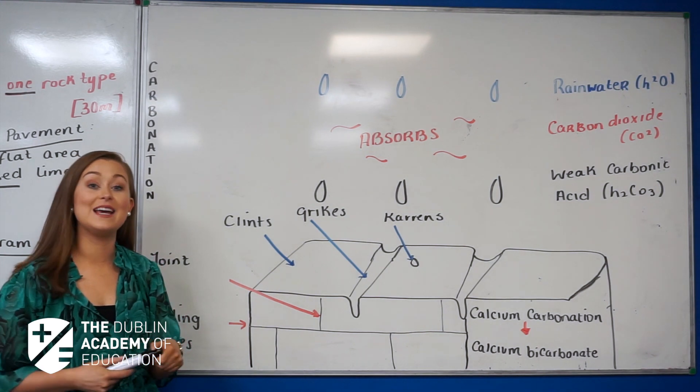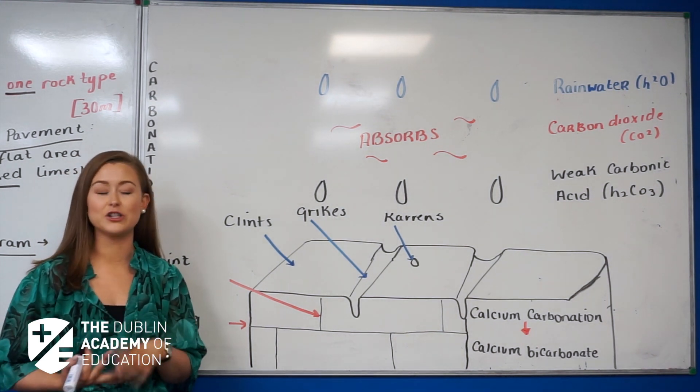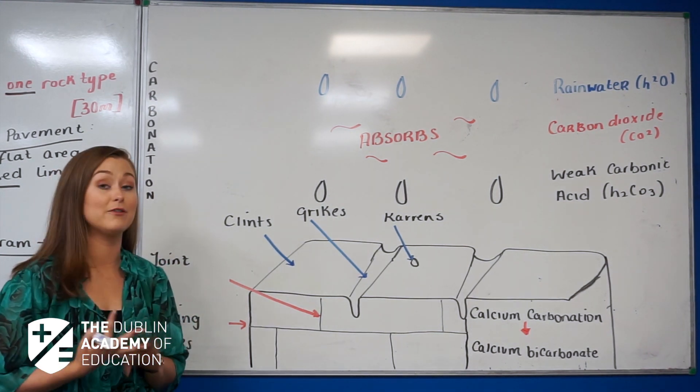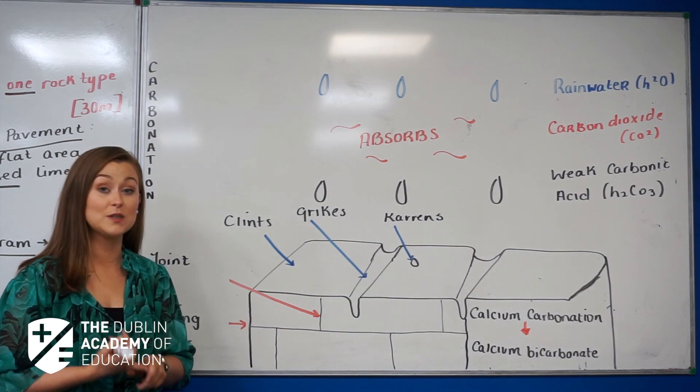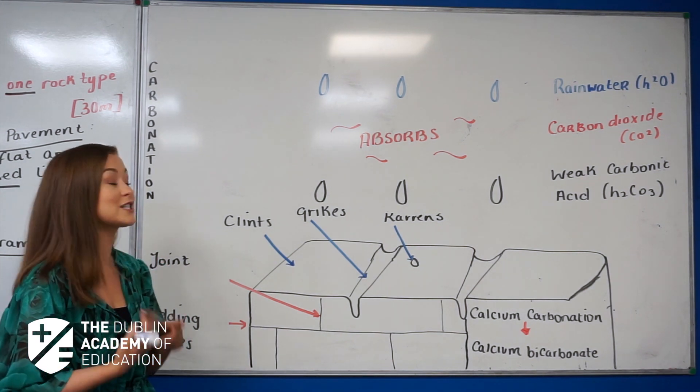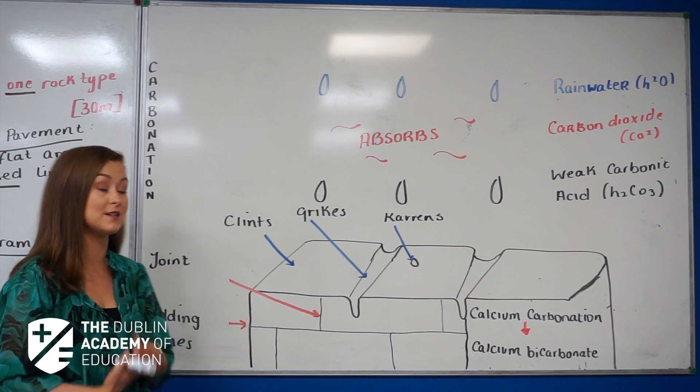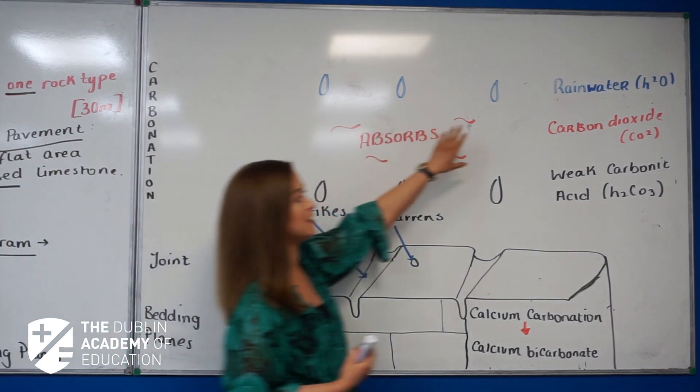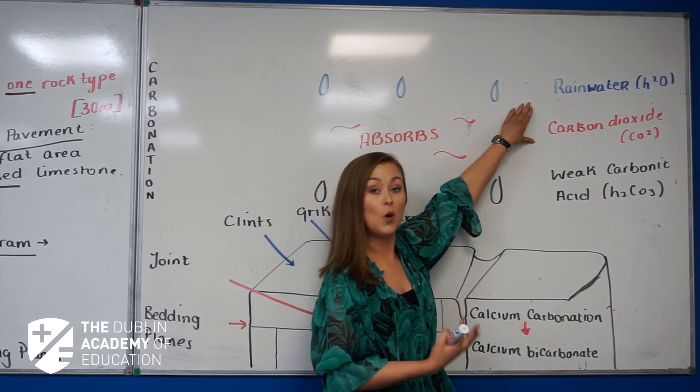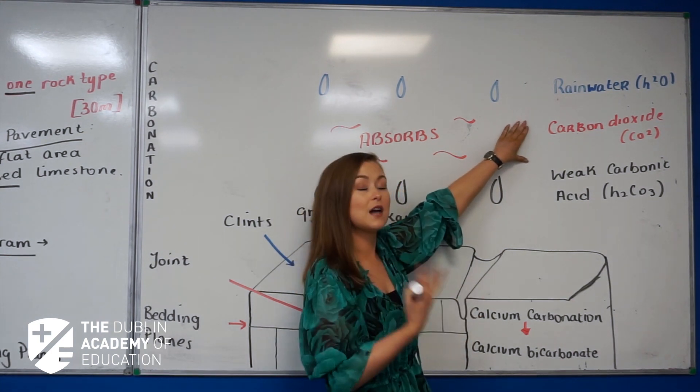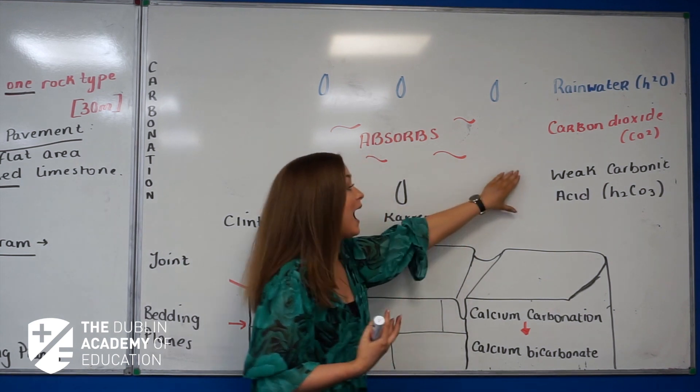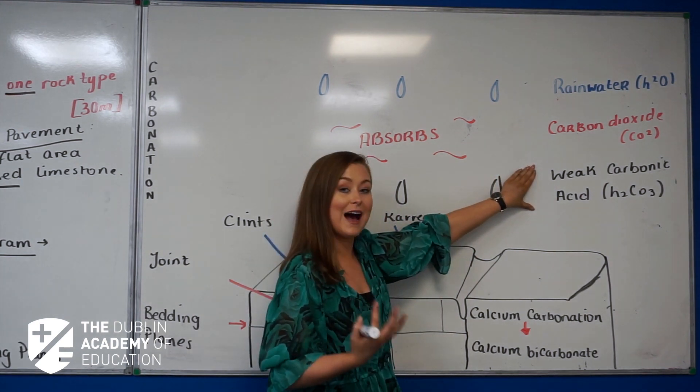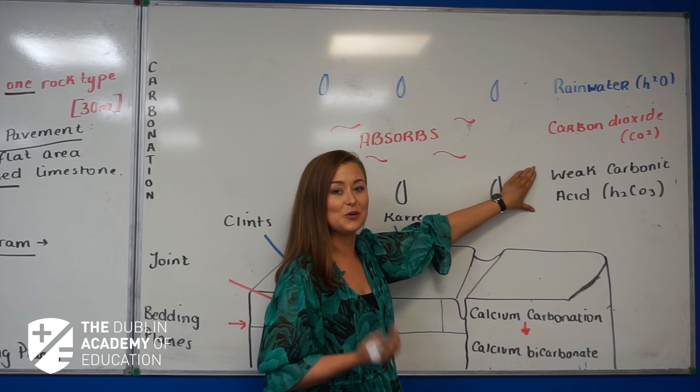Okay, so what we're going to discuss now is the chemical weathering process of carbonation. What we know is that Carboniferous limestone, the limestone associated with our karst region, is particularly vulnerable to this chemical weathering process. So how carbonation actually occurs: rainwater, H2O, falls from the sky. It absorbs carbon dioxide, CO2, from the atmosphere and produces a weak carbonic acid, H2CO3.